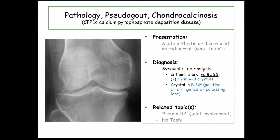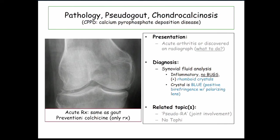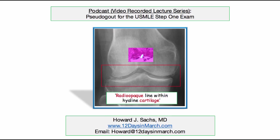Honestly, the purpose of pseudogout is to compare and contrast with gout. They're going to set you up for a gout scenario and then describe some different crystal, and you need to be attuned to that. That concludes this discussion of pseudogout for USMLE Step 1. If you have any questions or concerns, please email me at 12 Days. Thank you.